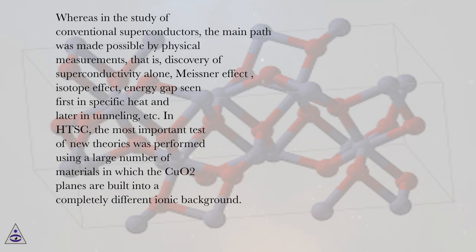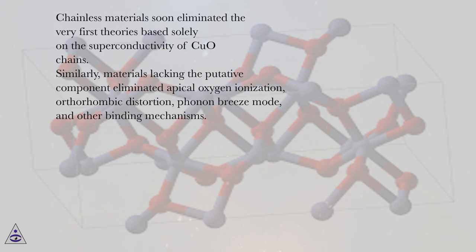In HTSC, the most important test of new theories was performed using a large number of materials in which the CuO2 planes are built into a completely different ionic background. Chainless materials soon eliminated the very first theories based solely on the superconductivity of Cu chains.